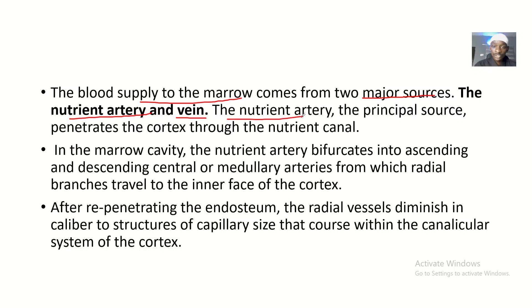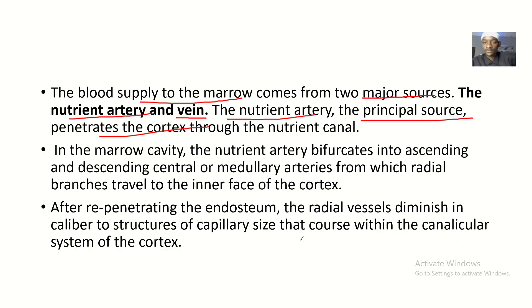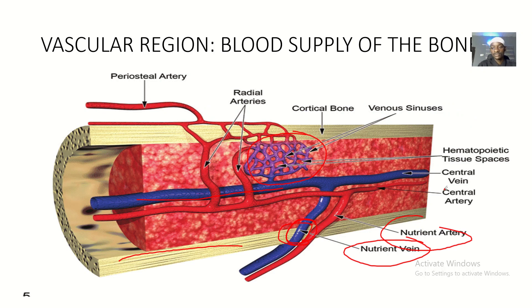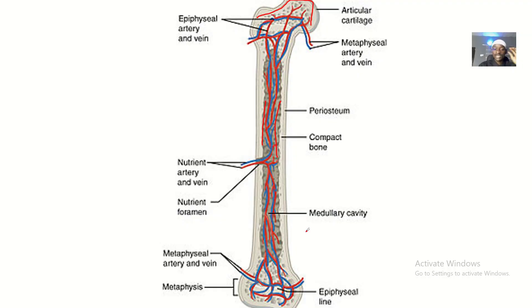The nutrient artery, which is the primary source, penetrates the cortex through the nutrient canal — there is an opening in the cortex for it to pass through. In the marrow cavity, the nutrient artery bifurcates into ascending and descending central or medullary arteries, from which radial branches travel to the inner face of the cortex. After re-penetrating the endosteum, the radial vessels diminish in caliber to capillary-sized structures that course within the canalicular system of the cortex.